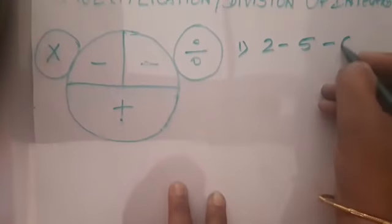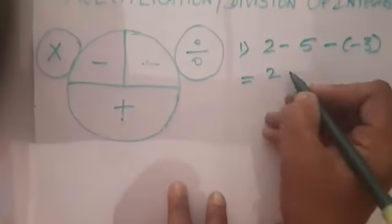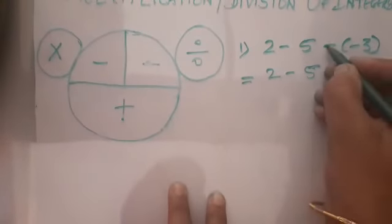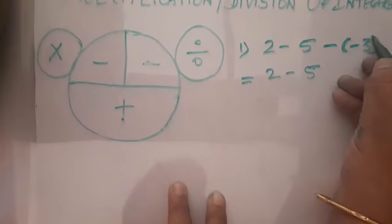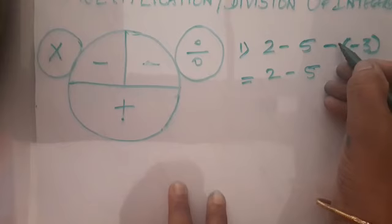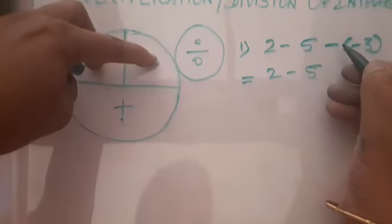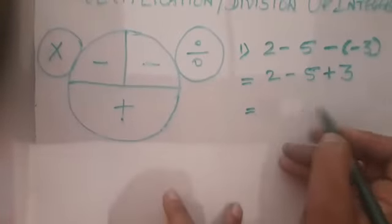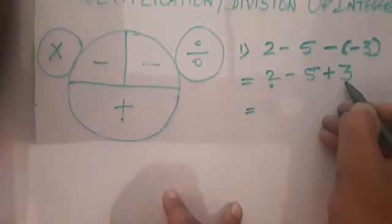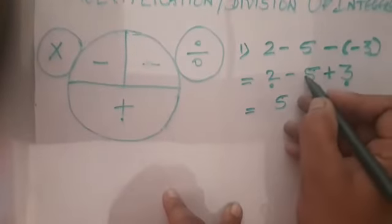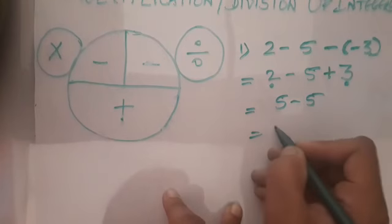Let us see a slightly more complicated example: 2 minus 5 minus minus 3. Here, the bracket contains minus 3, and minus and minus outside means multiplication — minus times minus becomes plus. So write it as plus 3. Now the expression is 2 minus 5 plus 3. Find numbers with the same sign: 2 and 3 are both positive. So minus 5 and plus 5 cancel to 0, giving 2 plus 3 is 5.